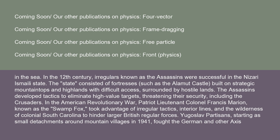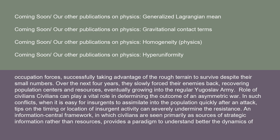Yugoslav partisans, starting as small detachments around mountain villages in 1941, fought the German and other Axis occupation forces, successfully taking advantage of rough terrain to survive despite their small numbers. Over the next four years, they slowly forced their enemies back, recovering population centers and resources, eventually growing into the regular Yugoslav army.